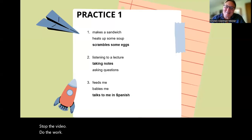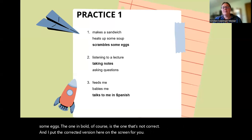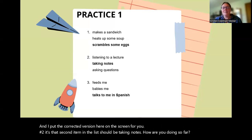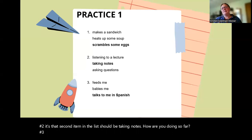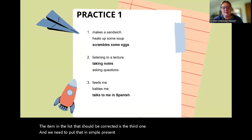All right, here are the answers. Number one: makes a sandwich, heats up some soup, scrambles some eggs. The one in bold, of course, is the one that's not correct, and I put the corrected version here on the screen for you. Number two: it's that second item in the list. It should be 'taking notes.' How are you doing so far? Number three: the item in the list that should be corrected is the third one, and we need to put that in simple present form to match the other two.